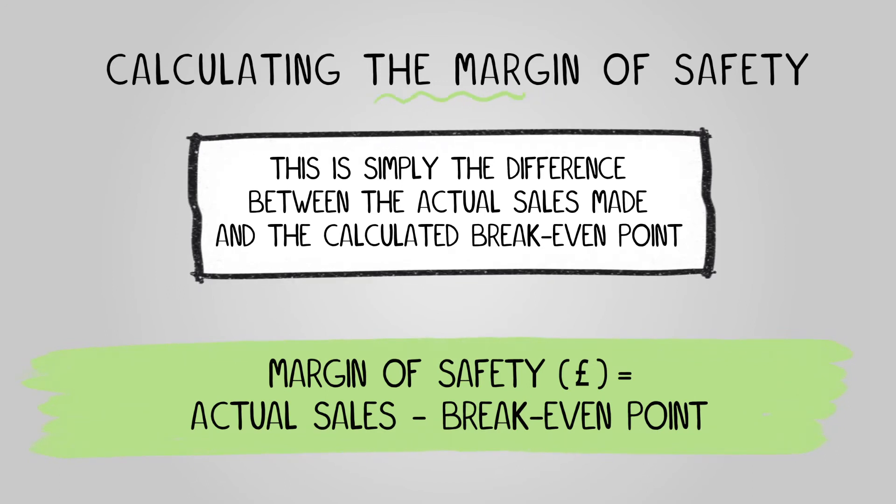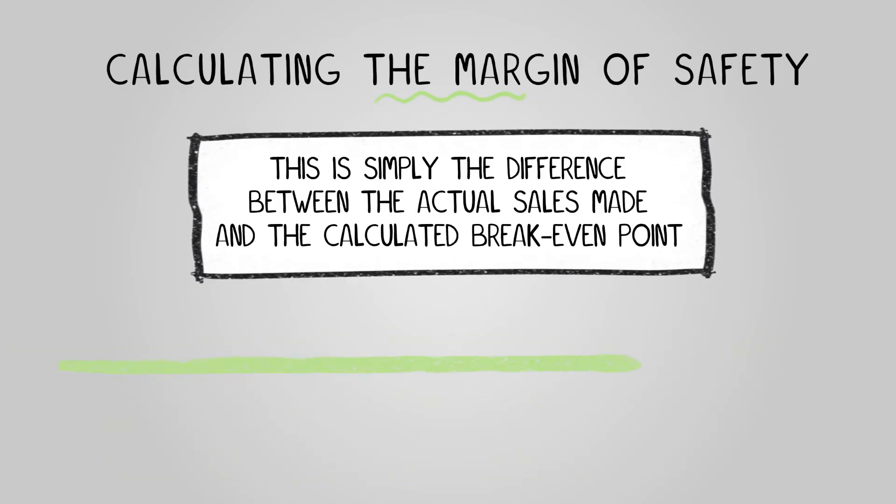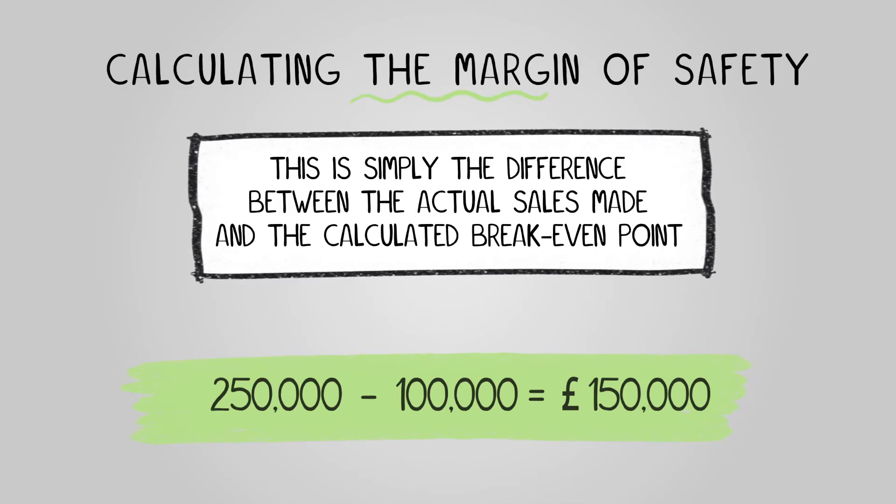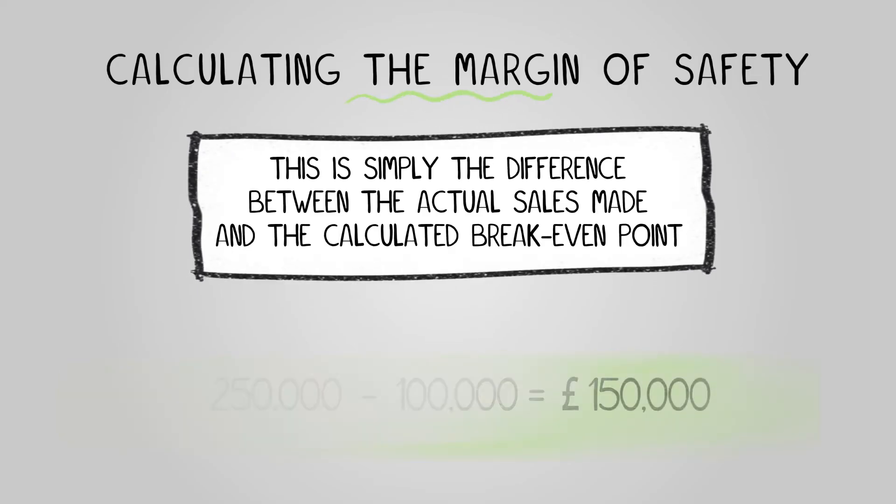For a business with sales of 250,000 pounds and a break-even point of 100,000 pounds, the margin of safety is 250,000 minus 100,000, which equals 150,000 pounds.